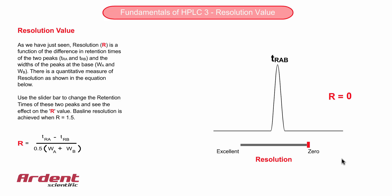The resolution value is sometimes incorporated into specifications for regulatory methods. For example, a resolution value of 1.5 is baseline separation between two peaks. This is when the peak signal returns to the baseline before rising again for the next peak.